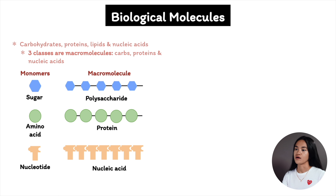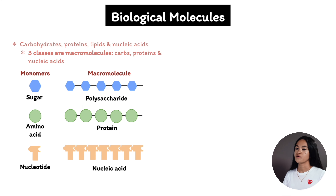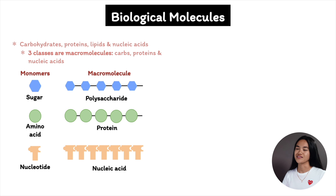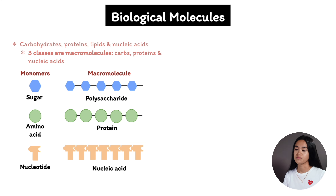These repeating units are the building blocks of a polymer and they are called monomers or subunits. Each of these polymers is made up of a different type of monomer, but the way cells make and break down polymers is basically the same. These processes are facilitated by enzymes, which are specialized macromolecules that speed up chemical reactions.